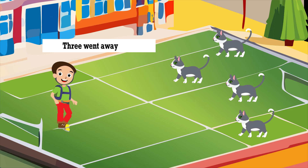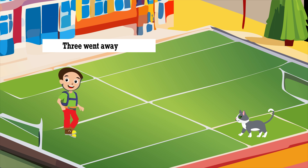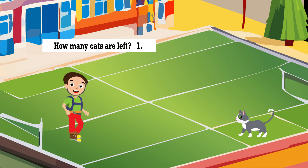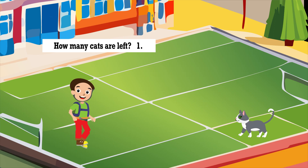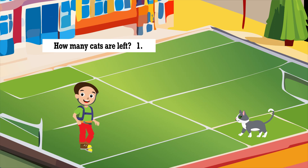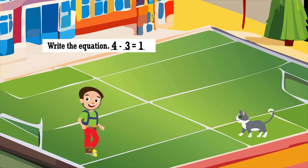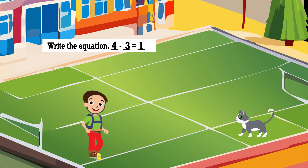The boy has four cats. Three went away. How many cats are left? One. Write the equation: four minus three equals one.